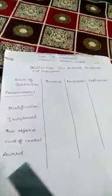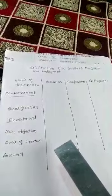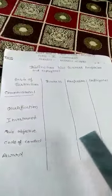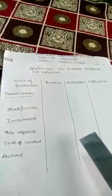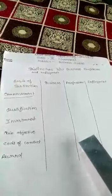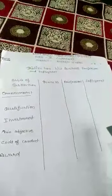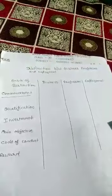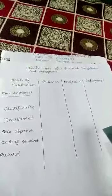Now the next point: reward. The reward for business is called profit — a businessman gets profit after doing business. In profession, professionals receive their reward in the form of a fee. In employment, the reward is called salary or wages — a person gets salary or wages after doing employment.